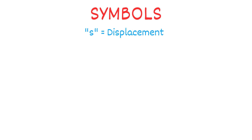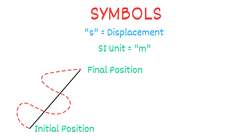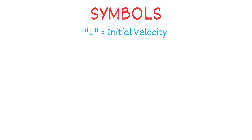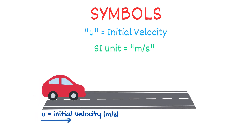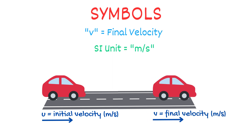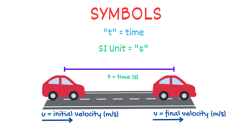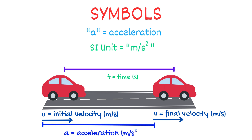The first symbol is S, which represents displacement — its SI units are meters. Displacement is the shortest distance between the initial and final positions of the object. U represents initial velocity, its SI units are meters per second. V represents final velocity, its SI units are meters per second. T represents time, its SI units are seconds. And A represents acceleration, its SI units are meters per second squared.